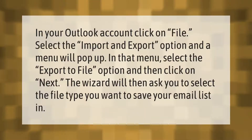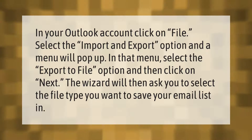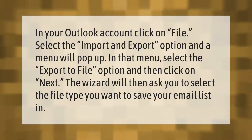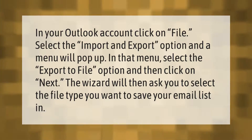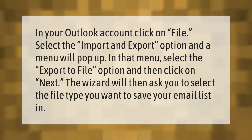In your Outlook account, click on File and select the Import and Export option. A menu will pop up — select the Export to File option and then click Next. The wizard will then ask you to select the file type you want to save your email list in.